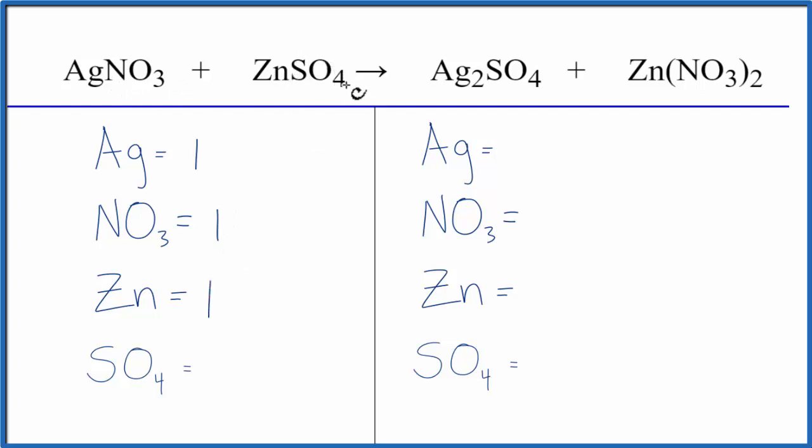SO4, that's called the sulfate ion. It also stays together, so we could say we have one sulfate. On the product side, we have two silver, two nitrate, one zinc, and one sulfate.